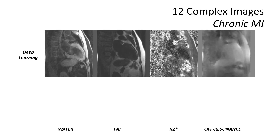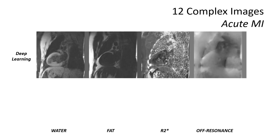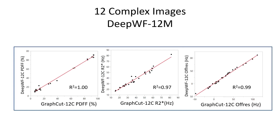Results from 12 complex images in a chronic MI subject show very good correspondence between water and fat images depicting fatty metaplasia, and R2 star maps also depict fatty metaplasia with high correspondence. In the acute MI subject, excellent correspondence is seen with slightly higher signal-to-noise in the water and fat images. R2 star maps now equivalently depict intramyocardial hemorrhage in the inferior wall, and off-resonance maps from deep learning show good correspondence to the graph cut method.